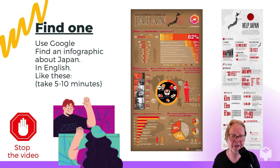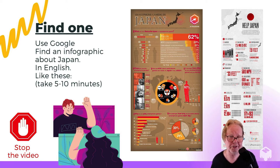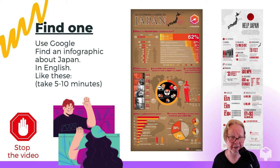I would like you now to stop the video and find a page on Google. If you go to Google and you type in infographic and Japan and click on images, I'm sure you can find one very quickly. Find one of your favorites and look at it closely. Please do that now.